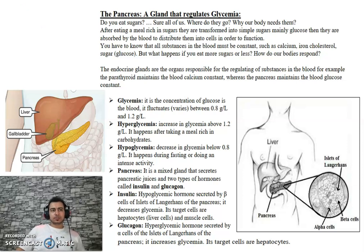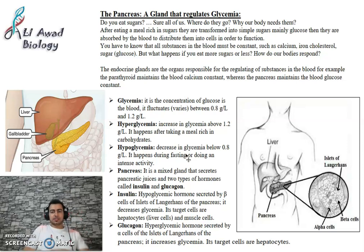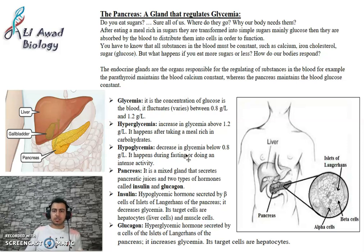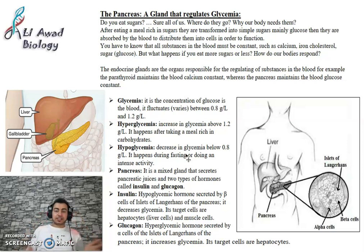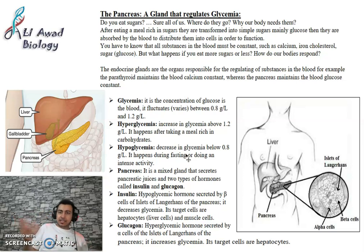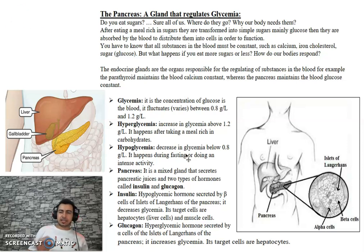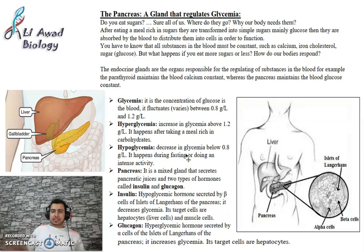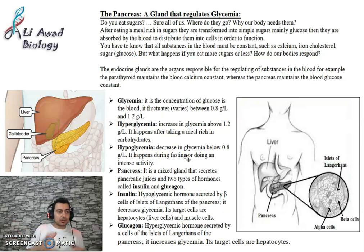Hello dear students. Today we are going to continue the chapter on hormones of the endocrine system. In the previous video I explained about the thyroid gland, its role, and the diseases that affect it. Today we are going to talk about another gland — the pancreas — and the role of the pancreas in the regulation of glycemia.